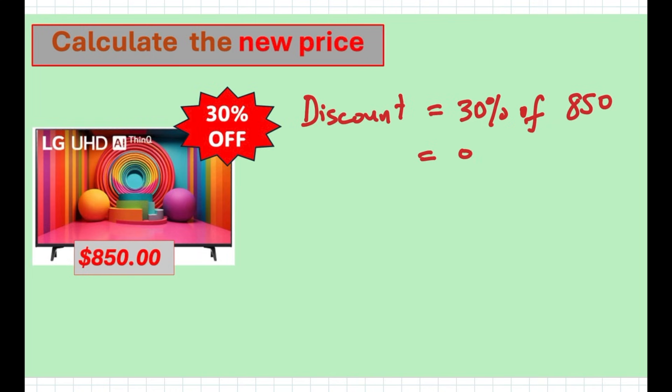That gives us 0.3 multiplied by 850. You can simply do that with your calculator, or you just do it manually by moving the decimal point. 3 multiplied by 85, which gives us $255.